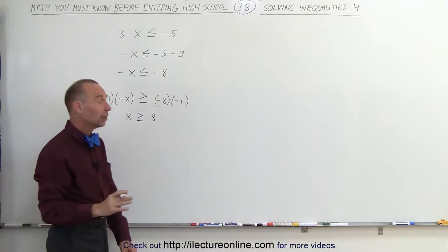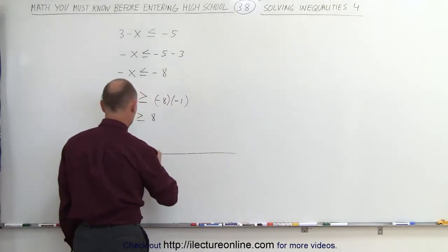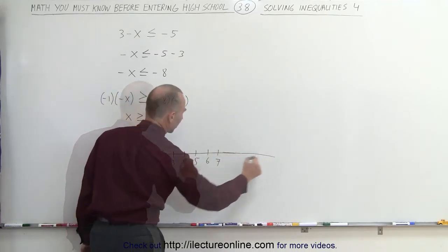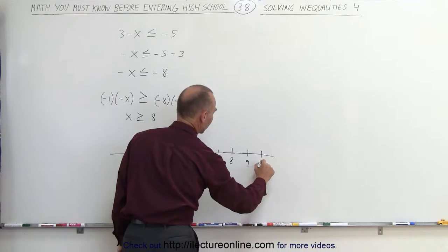When we place it on the number line, it looks as follows. So here's 0, 1, 6, 2, 7, 3, let's continue on here, 8, 9, and 10.